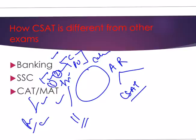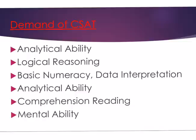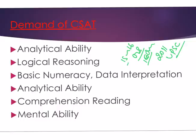Now we will see the demand of CSAT paper. As we know, CSAT paper was added by UPSC in 2011. Before this, there was only a 150-question GS paper, and within that paper, around 15 to 16 questions were asked from general mental ability. So before 2011, CSAT was not a separate paper — aptitude and reasoning were included within that single GS paper.